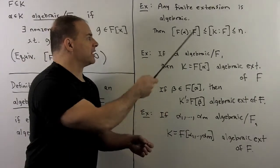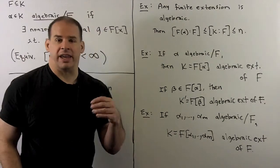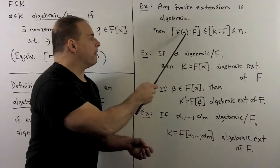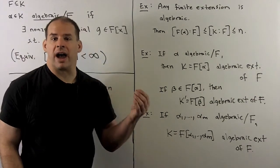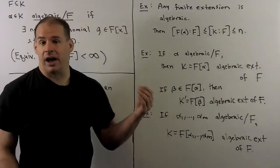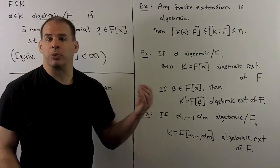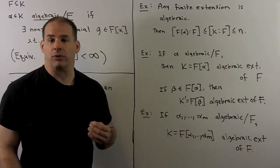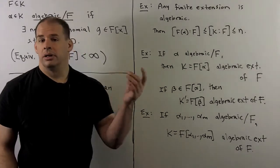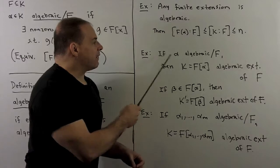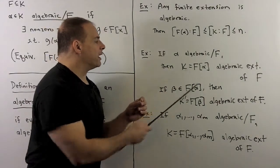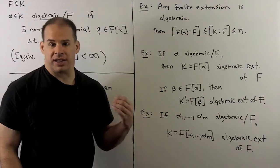For instance, let's call our finite extension k. If I take any alpha in k, then the subfield generated by f and alpha — its degree over f is less than or equal to the degree of k over f, and that's finite. So every alpha is algebraic over f, and the extension is also algebraic over f. As a subcase of this, if I take alpha algebraic over f and set k equal to f adjoin alpha, then that's an algebraic extension of f.